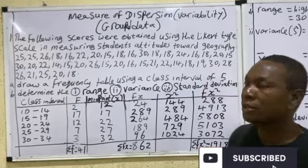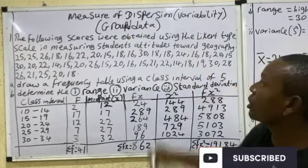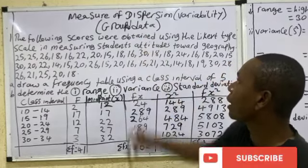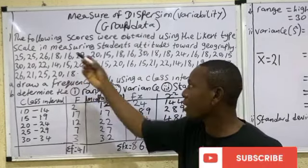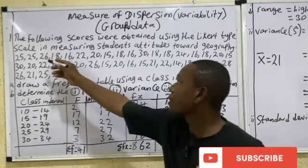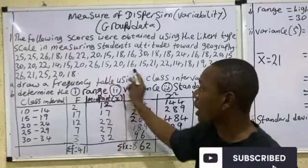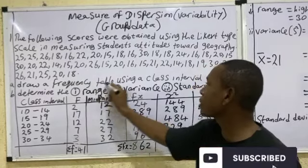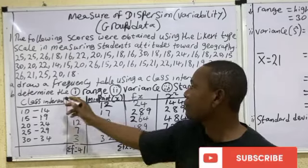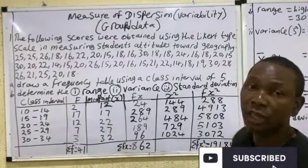Welcome to Science Assets. In today's class I'll be talking about measures of dispersion or variability in statistics for grouped data. Let's take a look at this question: the following scores were obtained using the Likert-type scale in measuring student attitude towards geography. The scores are displayed; draw a frequency table using a class interval of five, and determine the range, variance and standard deviation.